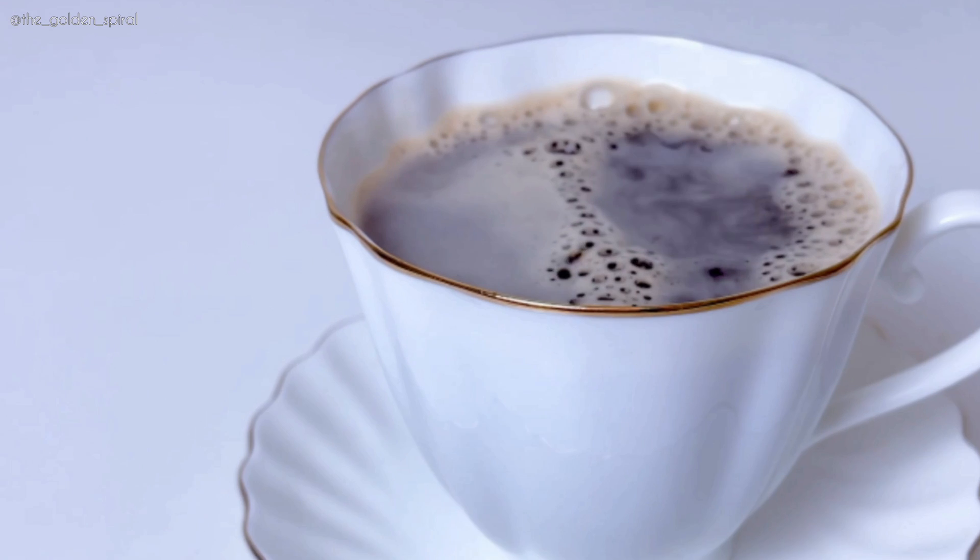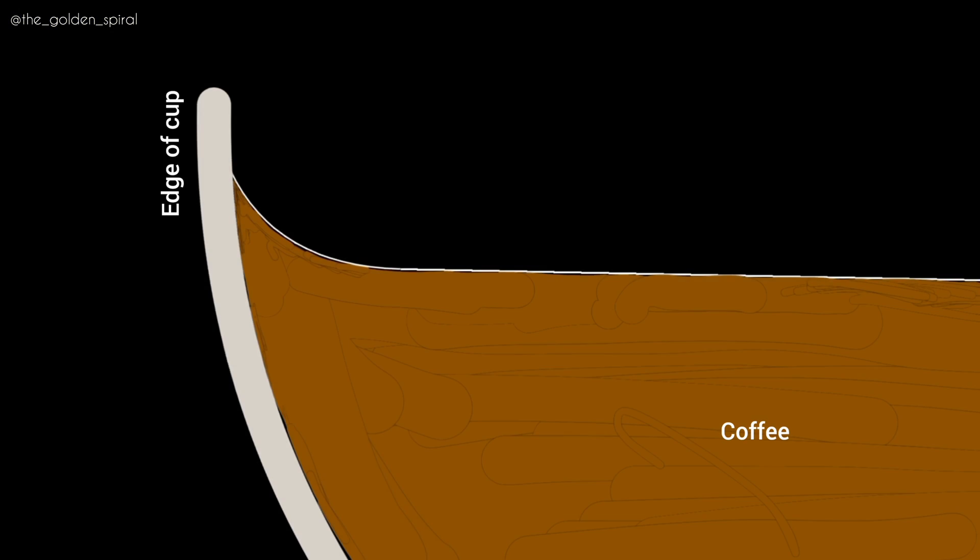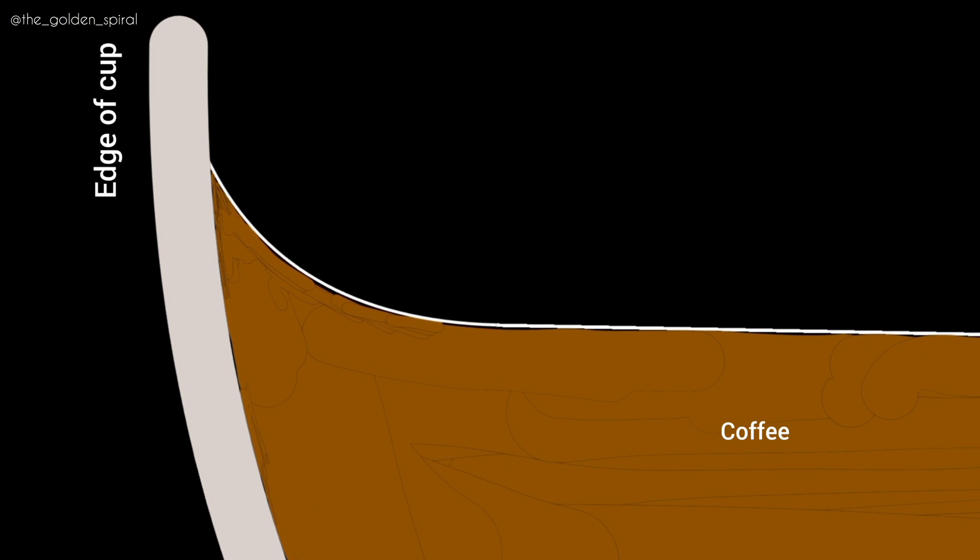And in the case of bubbles in your coffee cup, the air-water interface is slightly distorted near the edge due to meniscus effect. And because bubble is buoyant, there is a net upward force due to gravity on the bubble.